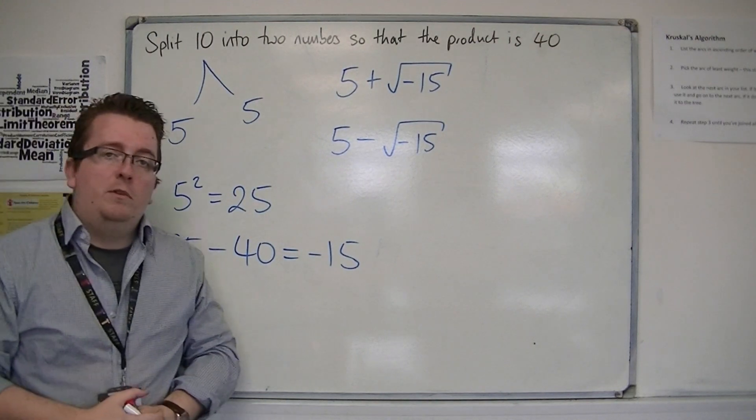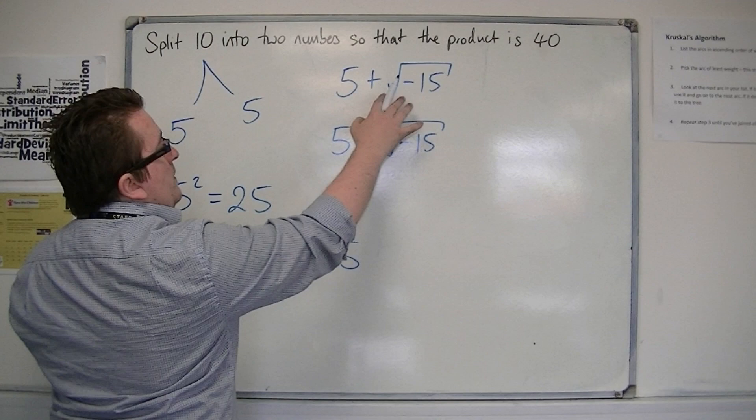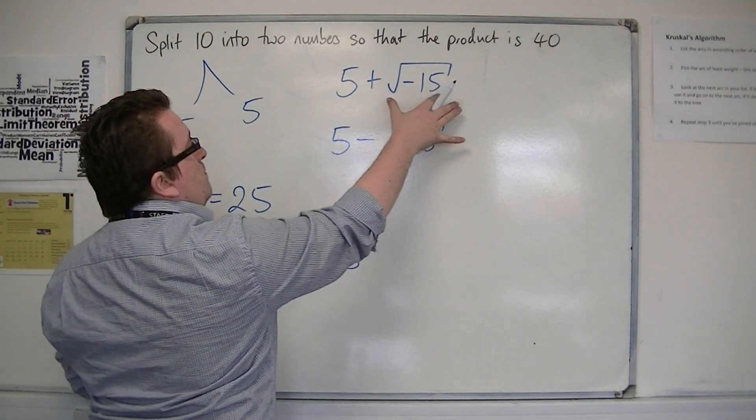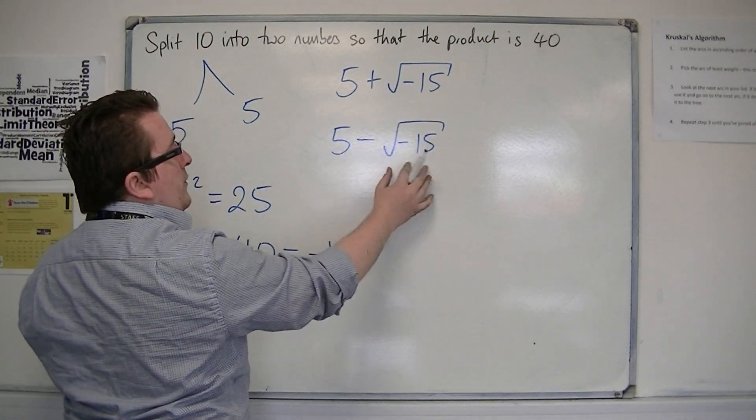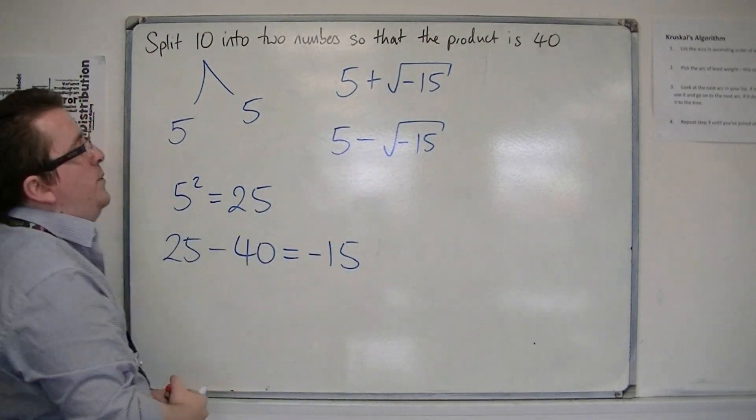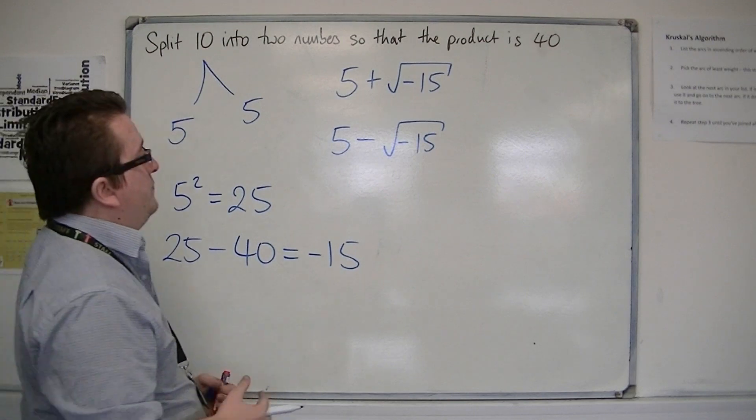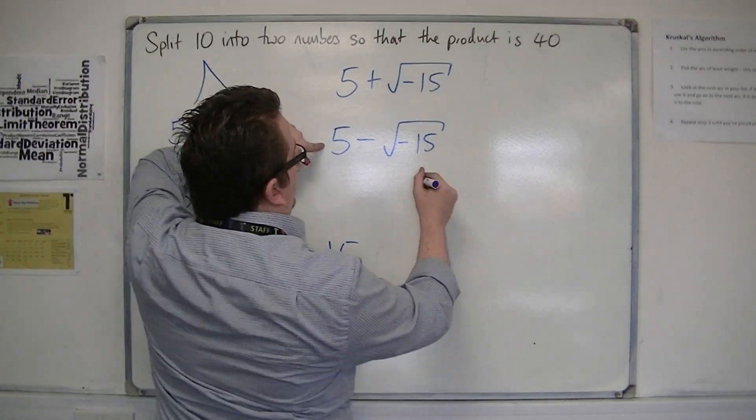Now if you add them together, then surely the root minus 15 and the minus root minus 15, they would cancel each other out. So you'd get 10 if you added them together. And if you multiply them together, you get 5 times 5 is 25.